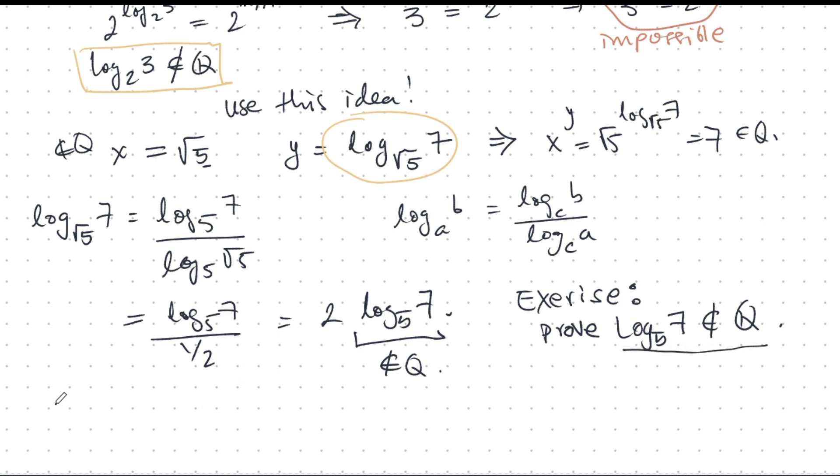Now we use the lemma. Remember the lemma? If r is a rational number, it's not 0, and x is irrational, then the product is irrational. So this whole thing is irrational. And so therefore, log base root 5 of 7 is irrational.